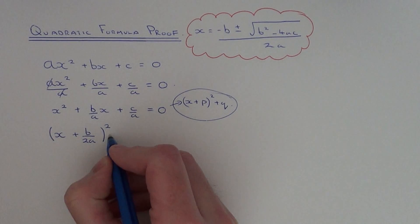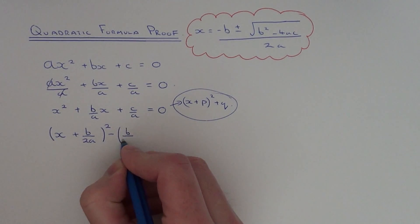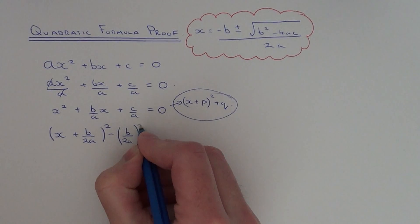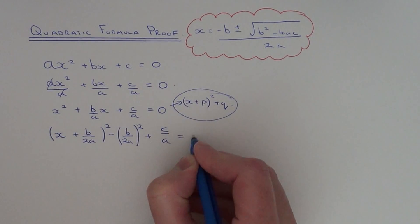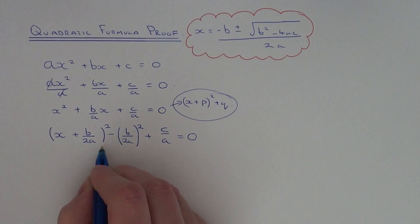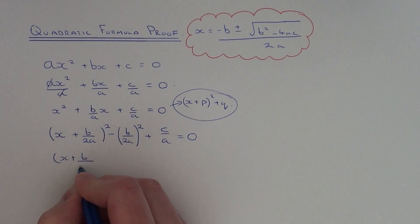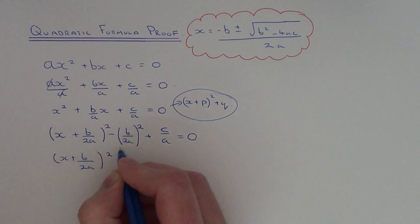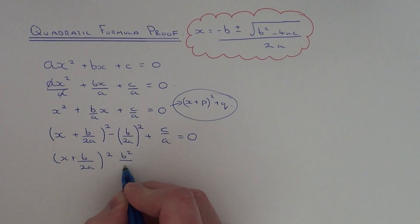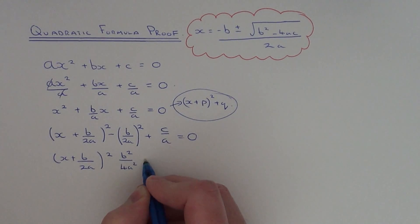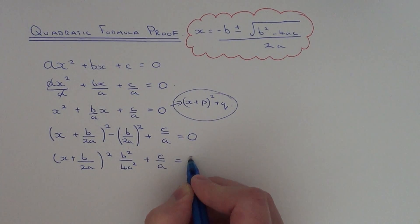Then if we square this and subtract it from the end, and we've still got the c over a term. Simplifying that squared term gives us b squared over 4a squared, so we have: x plus b over 2a, all squared, minus b squared over 4a squared, plus c over a equals zero.